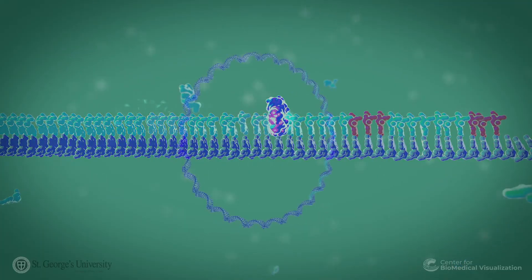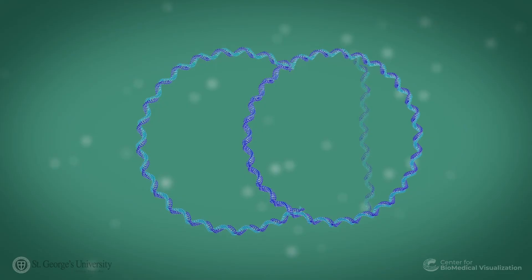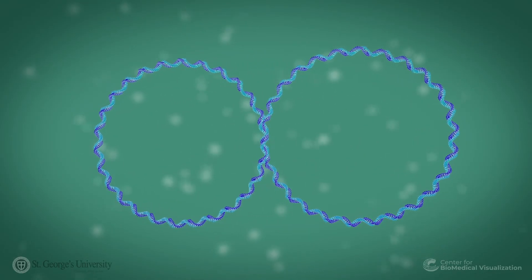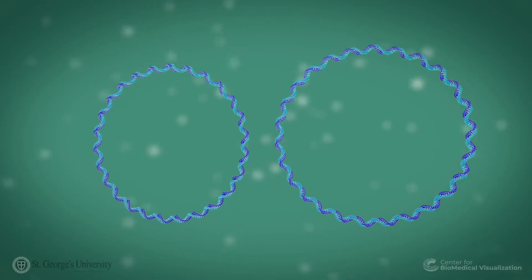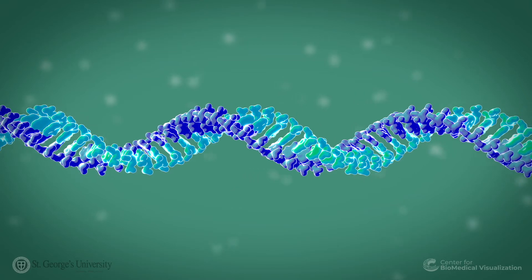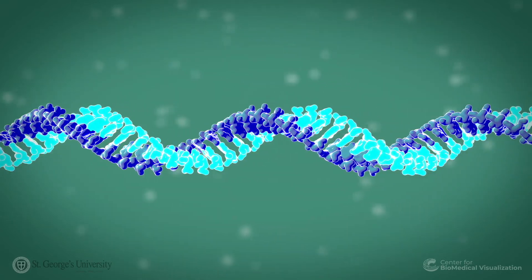Each strand of the prokaryotic circular genome serves as a single-stranded template for DNA replication. Upon completion of DNA replication, each replicated circular genome will consist of one strand of parental DNA and one strand of daughter DNA.